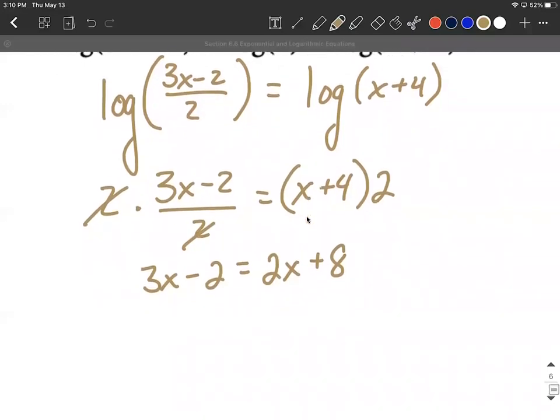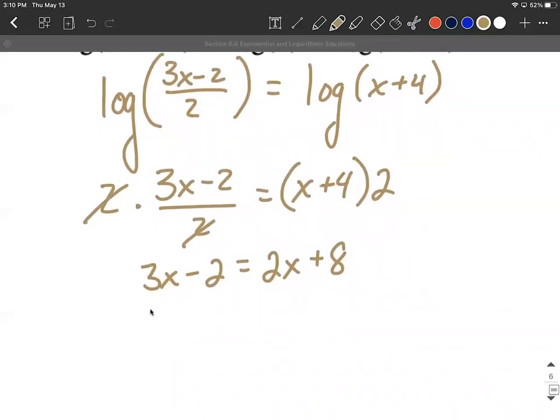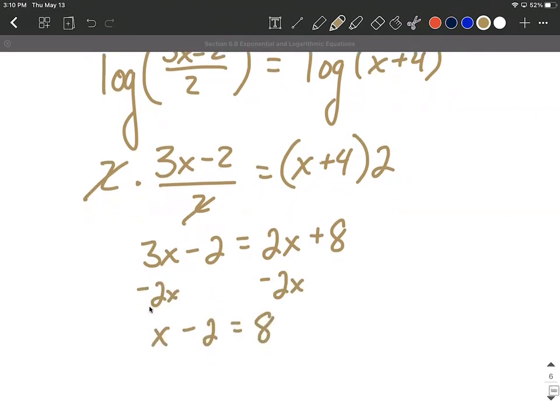All right, no more fractions, nice linear equation. Let's move all the variable terms to the left hand side, so subtract 2x. 3x minus 2x leaves us with 1x minus 2 equals 8, and then to get x all by itself we'll add 2 to both sides. In this case I got x equals 10. Good exact solution.